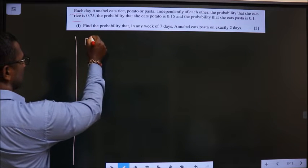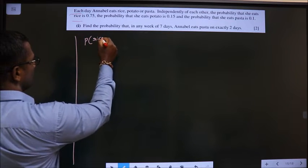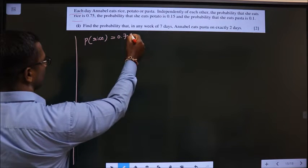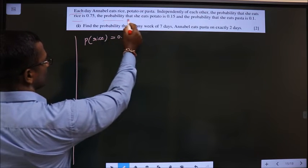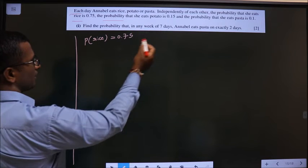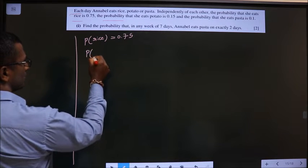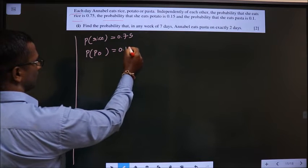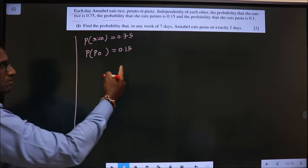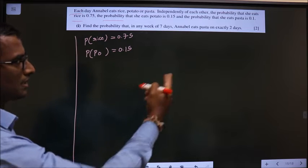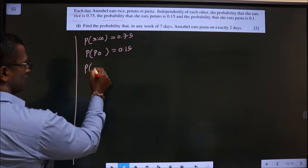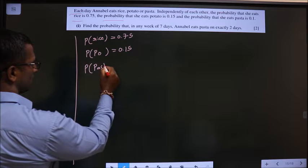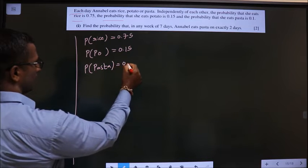So, given is probability of eating rice is 0.75. The probability that she eats potato is 0.15. So, P of potato is 0.15. And the probability that she eats pasta is 0.1. So, P of pasta is 0.1.